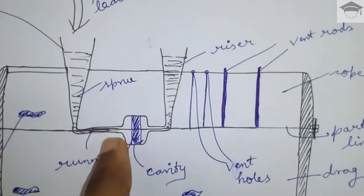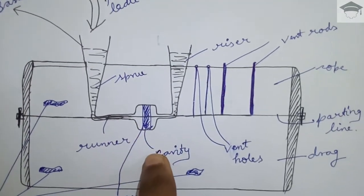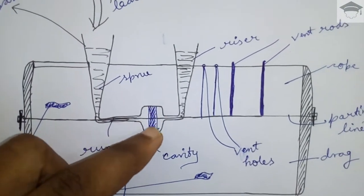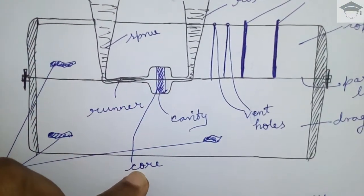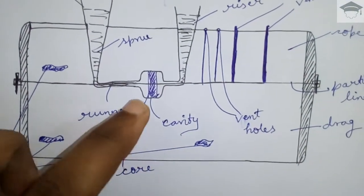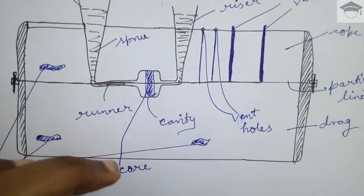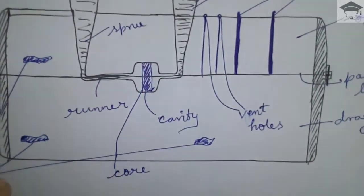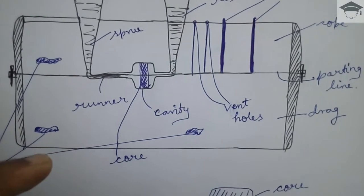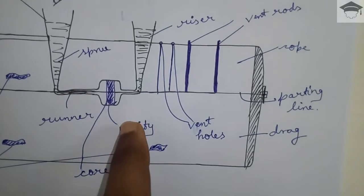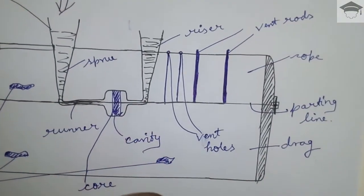After that it finally reaches the cavity. So this is the cavity. This hole is the cavity and this blue hatched portion is known as core. Now if we require hollow component then core is placed - core is used and placed in the cavity. If a hollow component is required, if no hollow component is required and solid component is required then core is not placed.